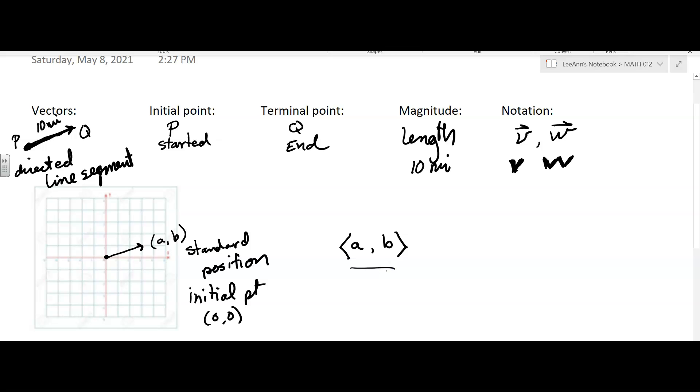Now, you can have a vector, let's say we have a vector going this way. And we could have coordinates for that point. Maybe we have the initial point is x₁, y₁, and then it ends up here at x₂, y₂.